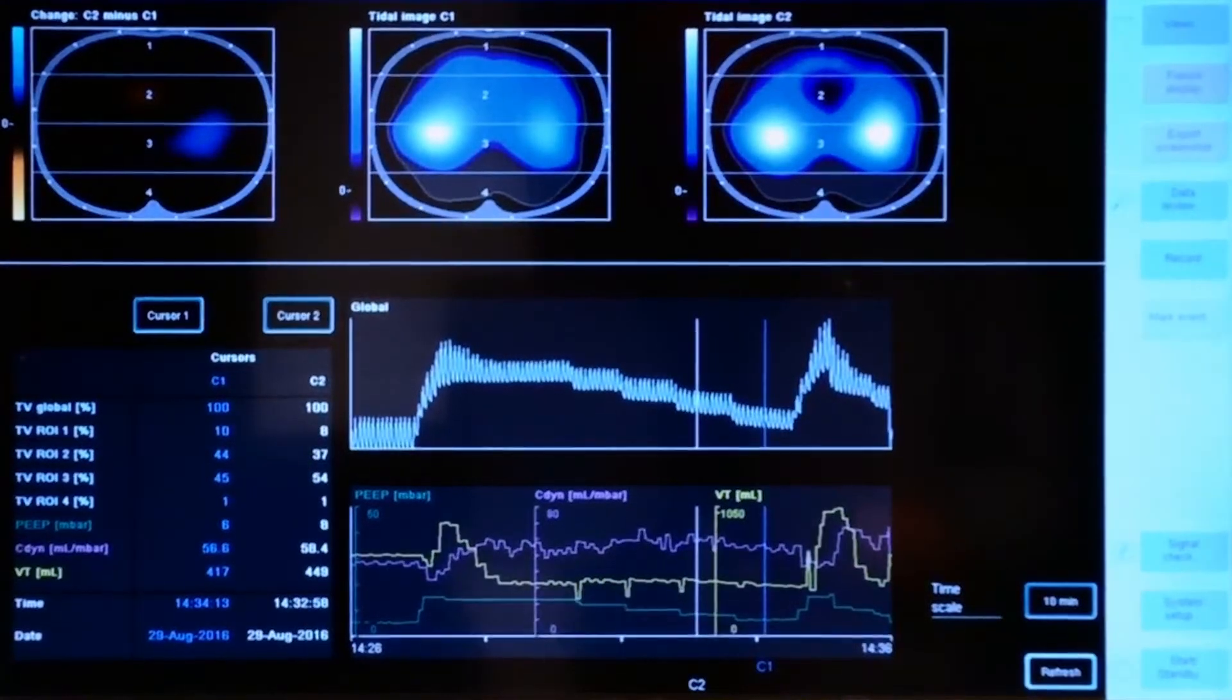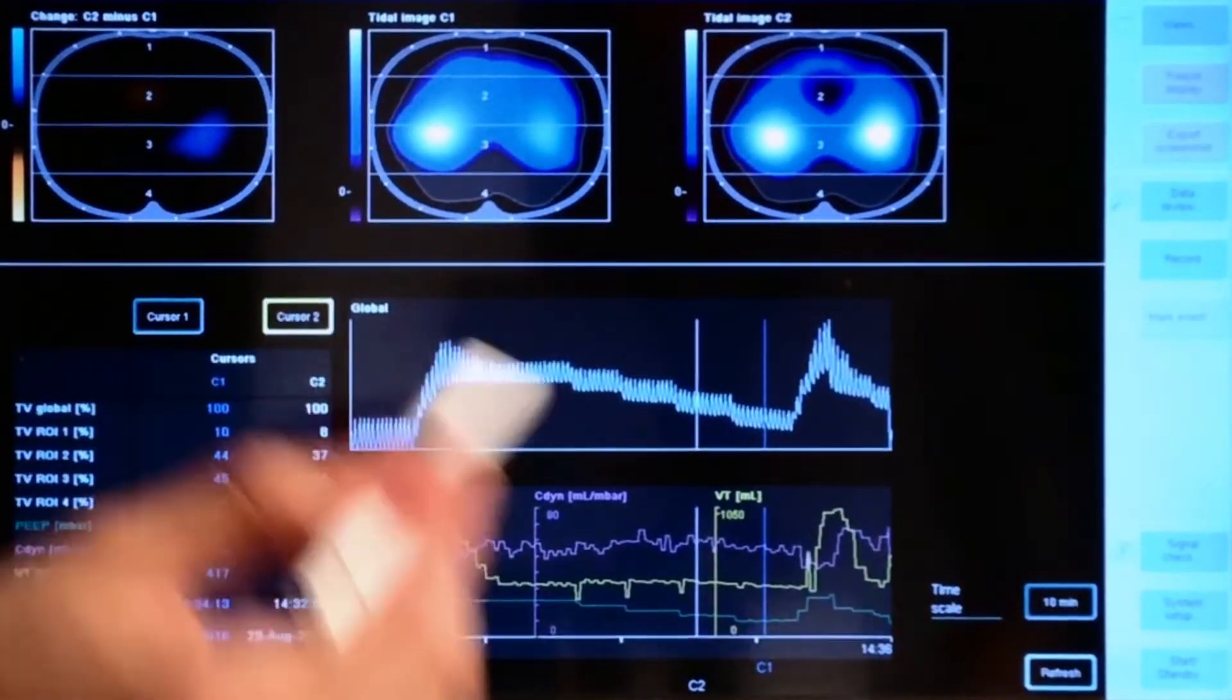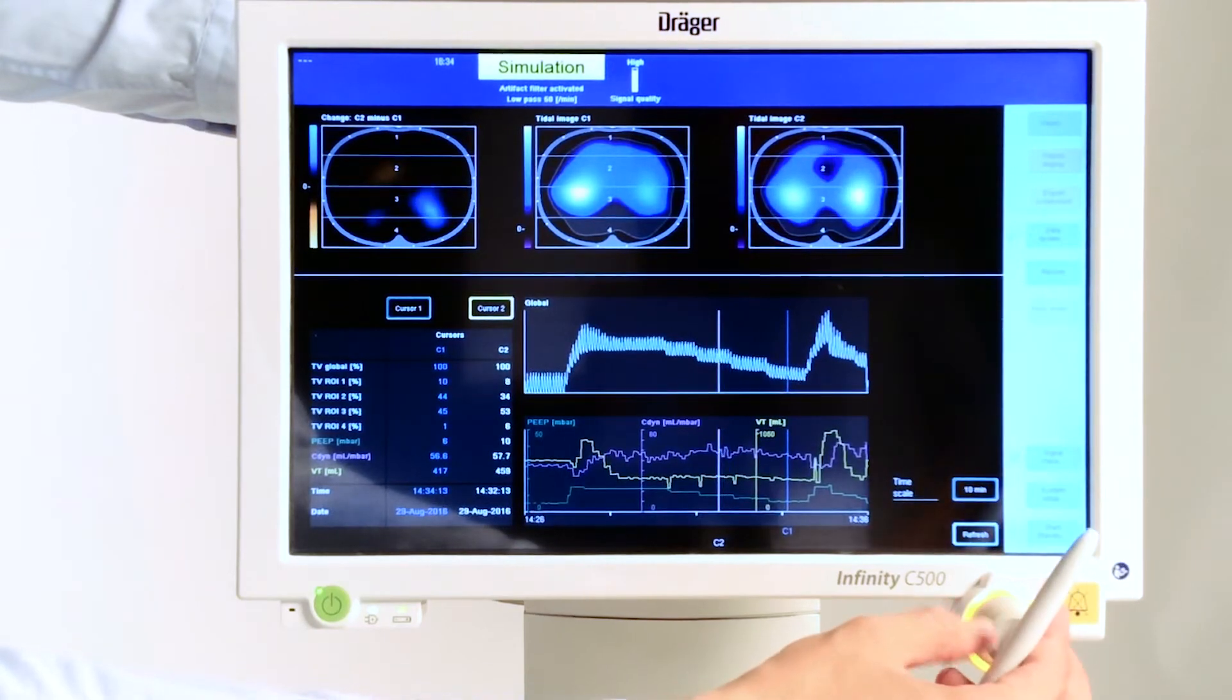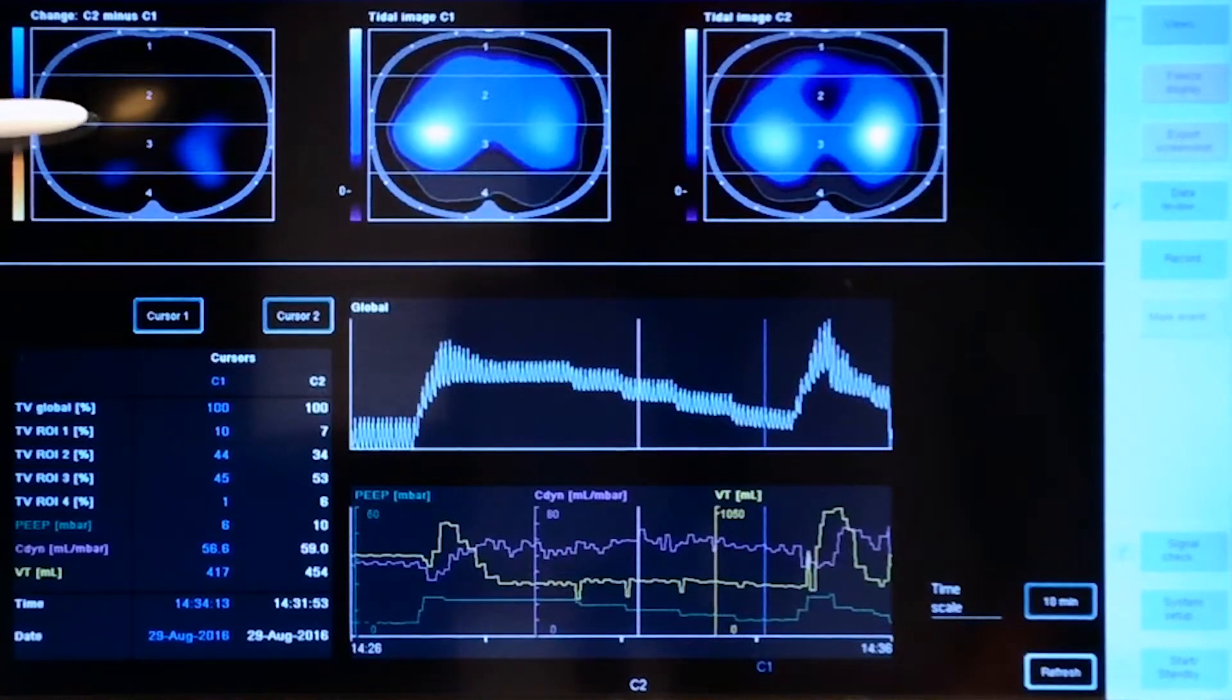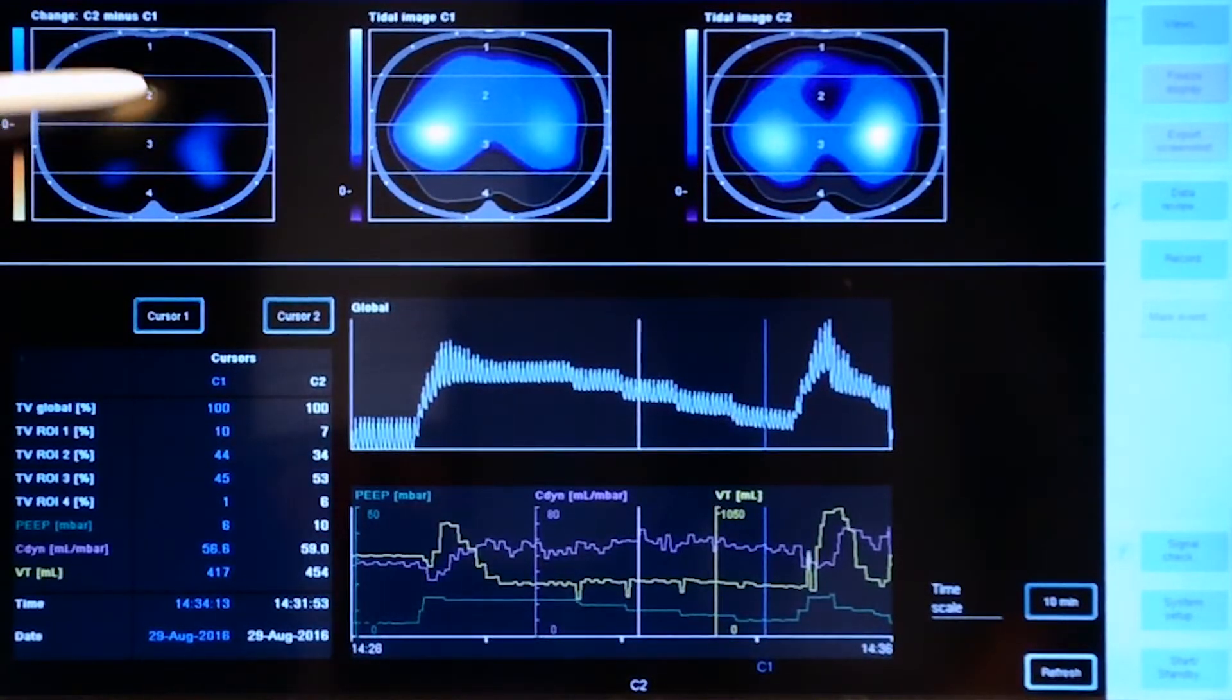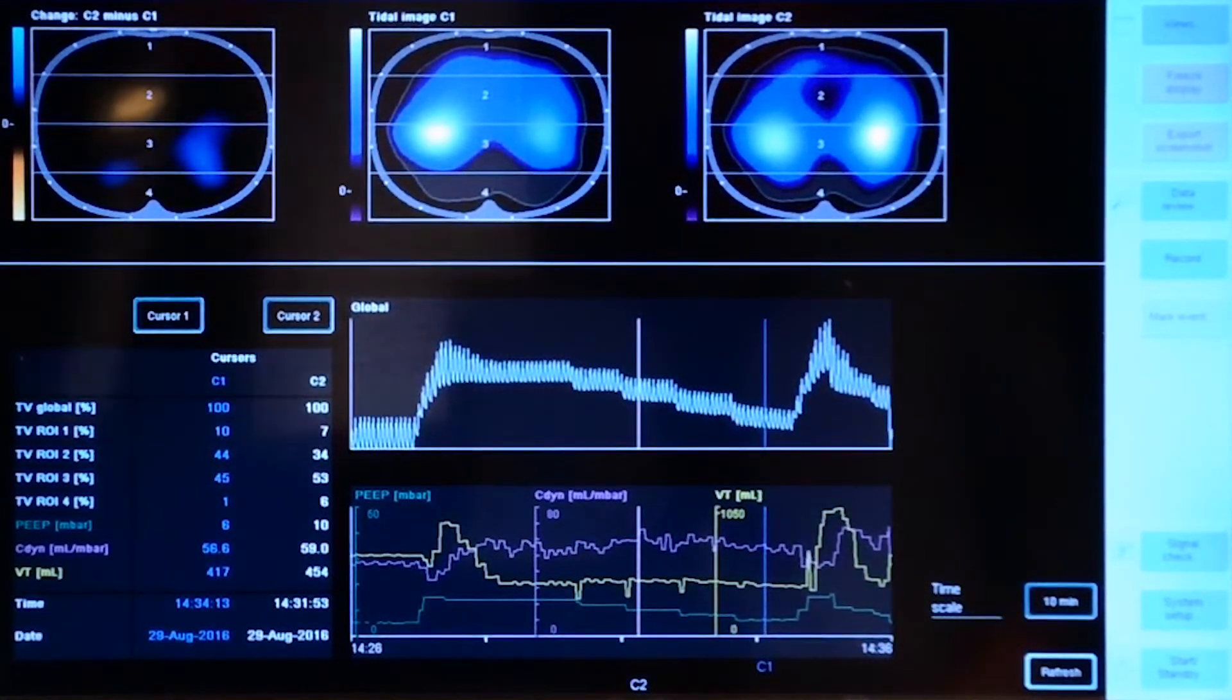However, if we go higher with the PEEP level to a PEEP level of 10, we can see that the colors in region of interest number 2 are becoming more and more orange.